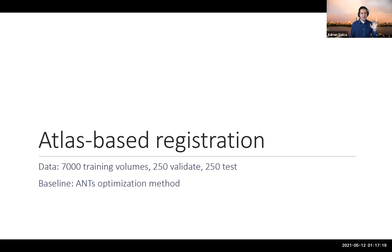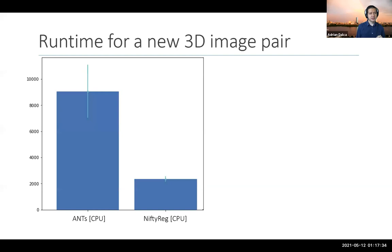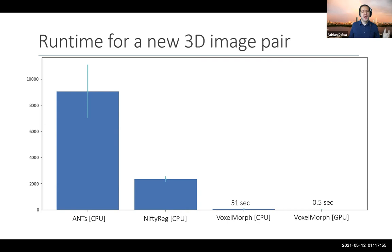Does this actually work? The first thing we cared about was speed. We tested a bunch of optimization baselines — some took two hours and were very accurate, some had slight losses in accuracy but took 10-20 minutes. Then we ran VoxelMorph: it was less than a minute on a CPU, less than a second on a GPU. So you could get the whole output very, very fast.